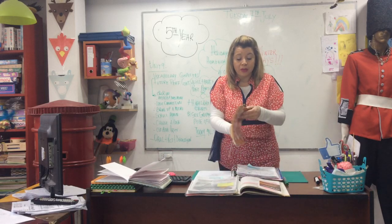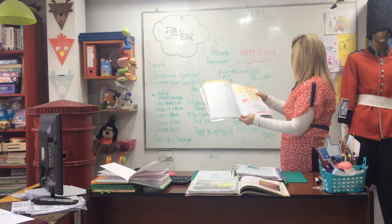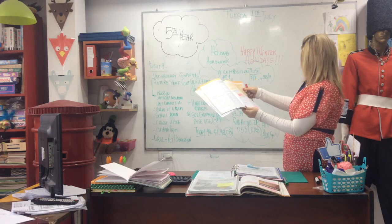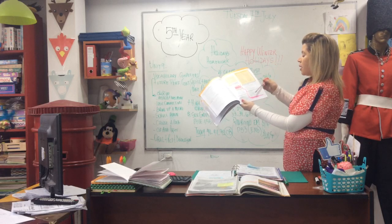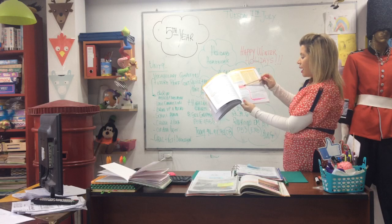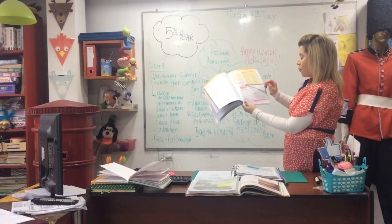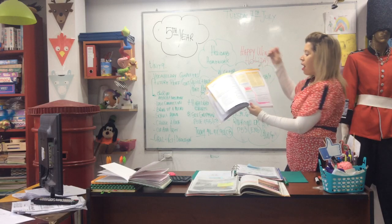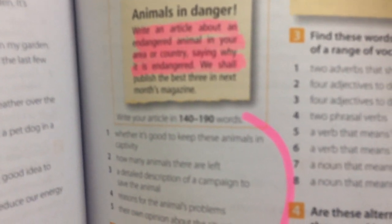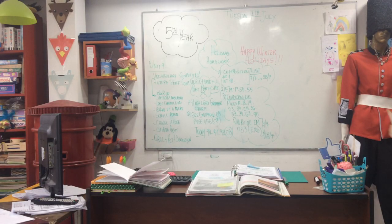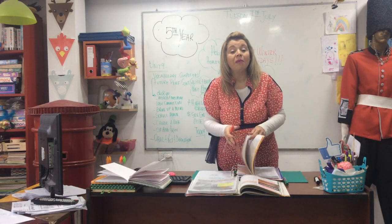And then on page 53, exercise 5: write your own article. You need to read the exercise — animals in danger. Write an article about an endangered animal in your area or country, saying why it is in danger. So choose one animal from our area that is endangered, and that animal will be the subject of your article — 140 words. Is it clear?